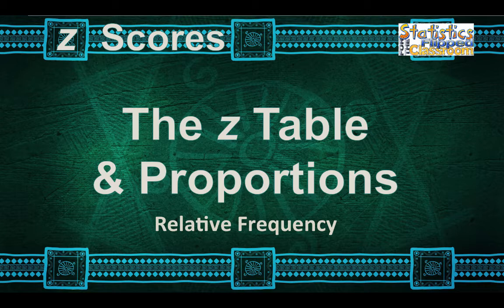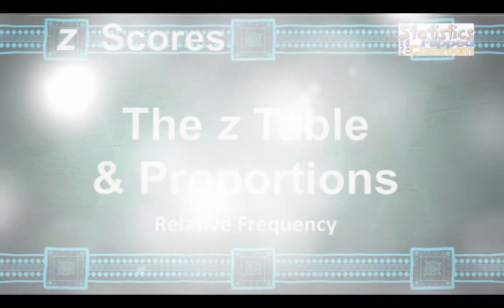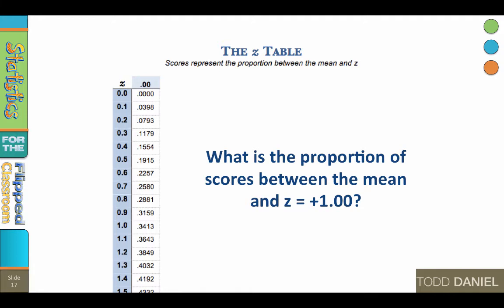Some include every possible z-score above or below the mean in tables that stretch across multiple pages. The z-table that I have provided for you fits onto a single page. This is the Swiss Army knife of z-tables. It gives you everything you need in a compact package.